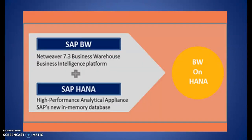If you look at this figure it will be more clear. Up to SAP BW 7.3, it was a NetWeaver platform that was database-independent, meaning it could run on any database like Oracle or MS SQL. From BW 7.5 onwards, SAP has made it mandatory that all data warehousing solutions it provides will run on the SAP HANA database platform. This is BW on HANA.